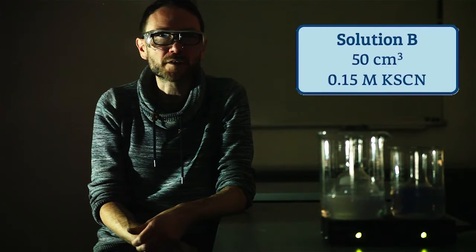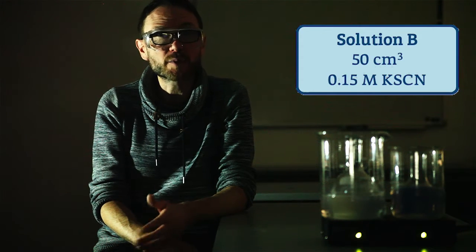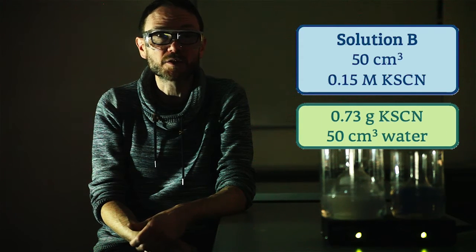Solution B is a 0.15 molar solution of potassium thiocyanate. Dissolve 0.73 grams in 50 cm³ of water.